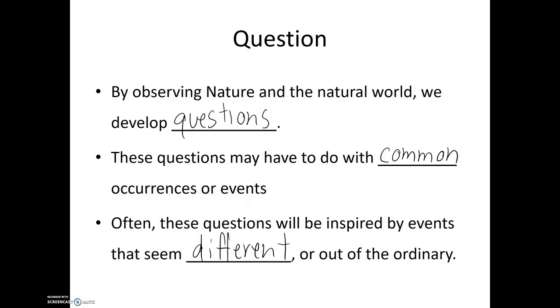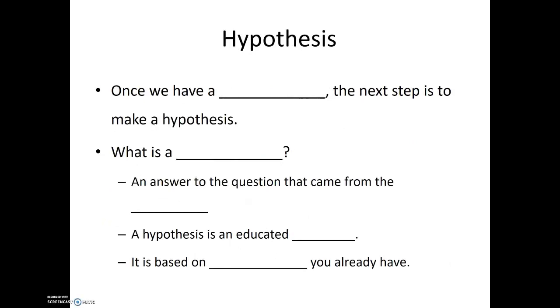Regardless of the origin of the question, once you have that question of why, our next step is to give it our best shot, attempt to answer the question based on what we know. So once we have a question, the next step is to make a hypothesis. So what is that? What is a hypothesis? Well, a hypothesis, first off, it's an answer to the question that came from our observation. Now you may have often heard of a hypothesis described as an educated guess, and that's a good definition of it. But one thing that's included within this definition that you may not always be aware of is that a hypothesis is based on knowledge you already have.